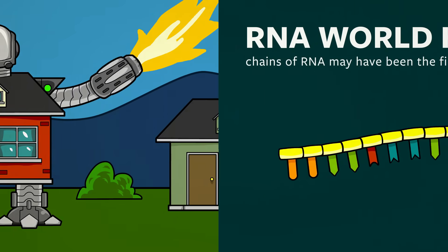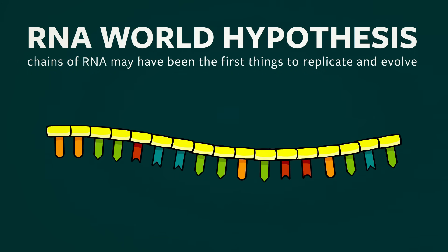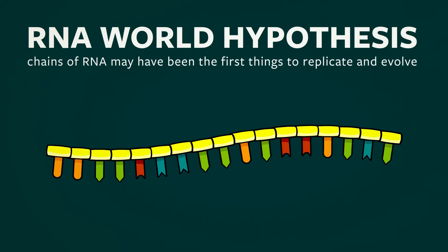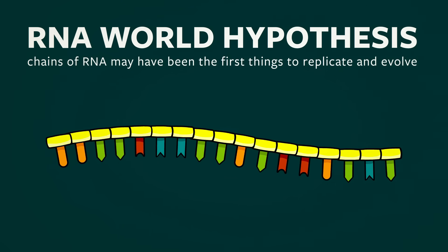To understand how RNA chains can interact with their environments, replicate, and evolve, we first need to understand the simple process of base pairing.